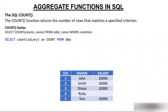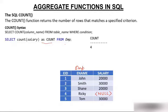The table name is 'imp'. Looking at it, you can clearly see that Ricky with employee ID 4 is not having any salary — that value is null. So when we run SELECT COUNT(salary) AS count FROM imp, the answer is 4. COUNT only counts non-null values. Each non-null salary is counted, but the null value is not counted, giving us 4.